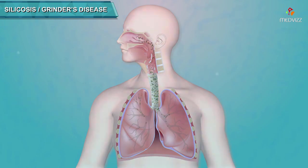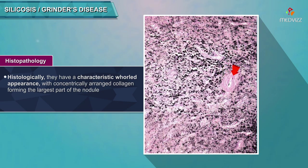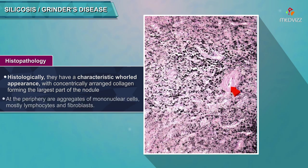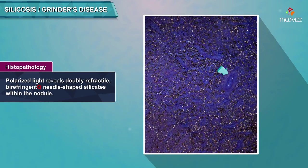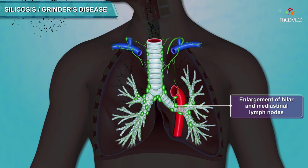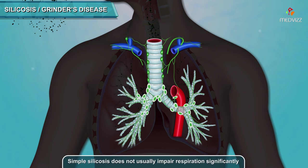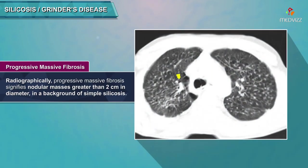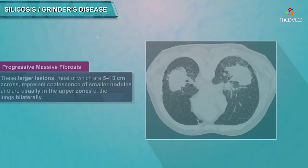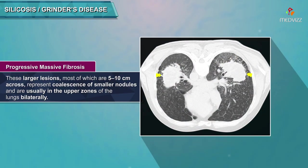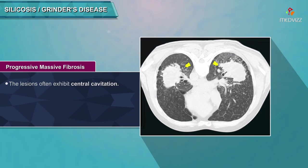Histologically, silicotic nodules have a characteristic whorl appearance with concentrically arranged collagen forming the largest part; at the periphery are aggregates of mononuclear cells, mostly lymphocytes and fibroblasts. Polarized light reveals doubly refractile, birefringent, needle-shaped silicates. Hilar nodes may be enlarged and calcified, often at their edges — eggshell calcification. Simple silicosis does not usually impair respiration significantly. Progressive massive fibrosis (PMF) features nodular masses greater than 2 cm in diameter — most 5–10 cm — representing coalescence of smaller nodules in the upper zones bilaterally, often with central cavitation.